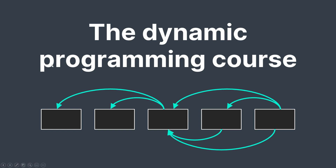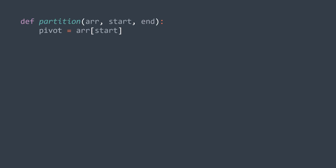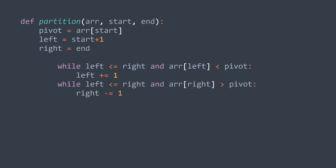Let's go back to quicksort to see an example. We'll sort this array using quicksort. We have many ways of choosing a pivot — we'll talk about that later. For now, let's just choose the first element. We put two pointers, left and right, then we search for an element greater than or equal to the pivot from the left, and an element smaller than or equal to the pivot from the right, and we swap. We keep doing that until left exceeds right.